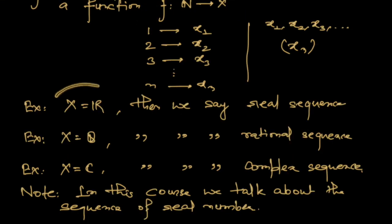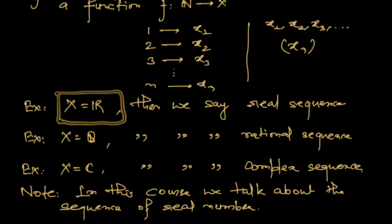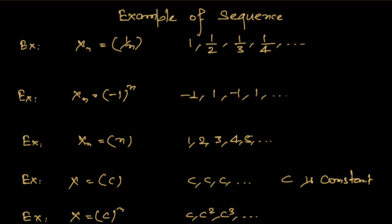If the set happens to be the real numbers, we call it a real sequence. If the set is the rational numbers, we call it a rational sequence. If the set is the complex numbers, we call it a complex sequence. In general, the set can be anything — for example, the row numbers in your class are actually a sequence. But in this course we usually talk about real sequences, so we consider the set X equal to ℝ.